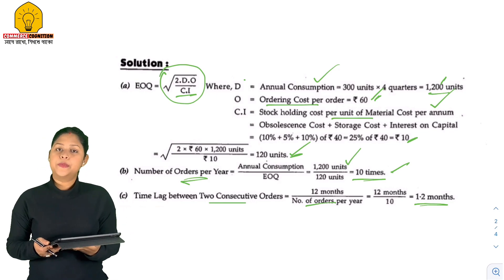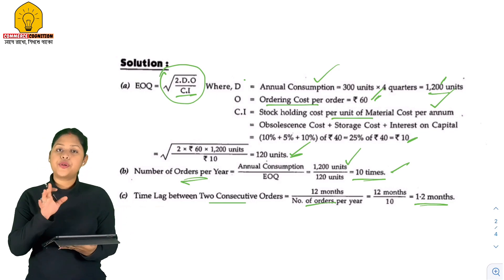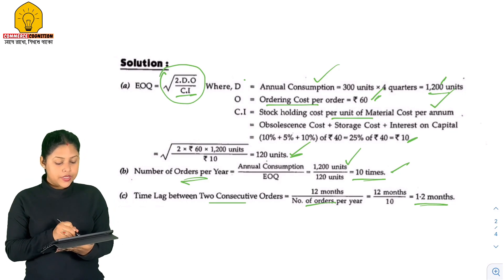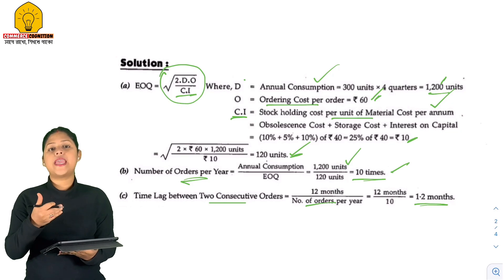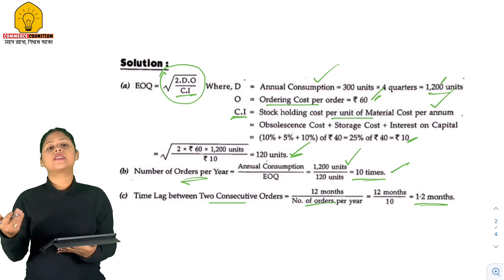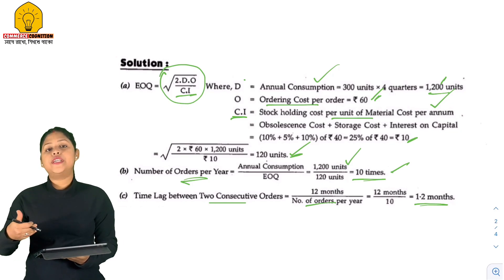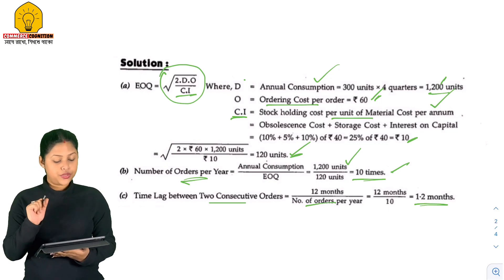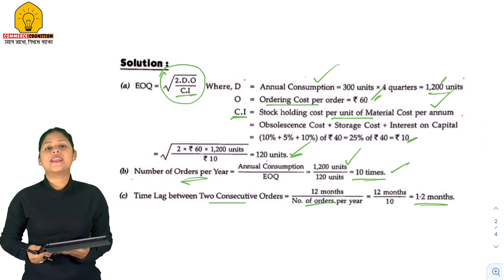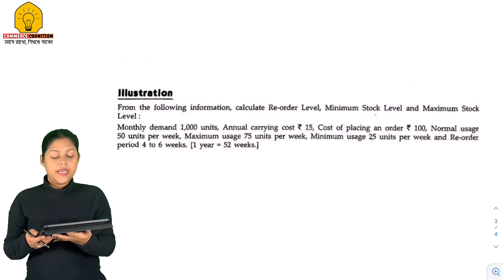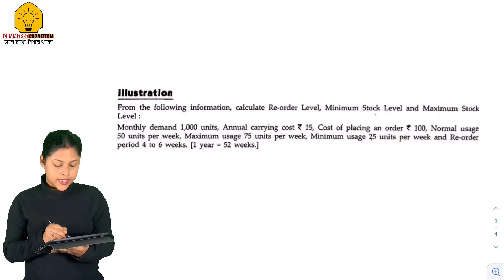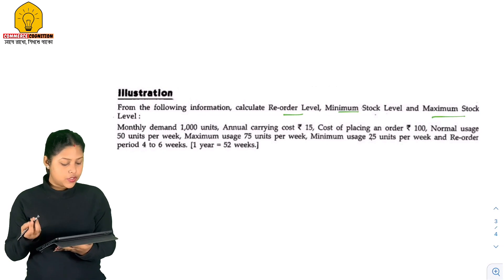So we now know the solution to this problem with our CI calculation — that is the obsolescence cost, interest on capital, and so on. That is the same type of calculation. Next, we have to take the second practical problem. I will calculate the Reorder Level, Minimum Stock Level, and Maximum Stock Level.